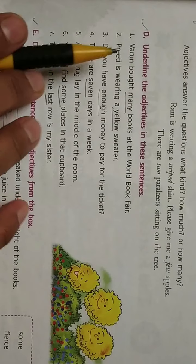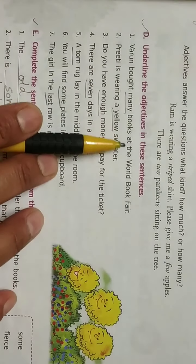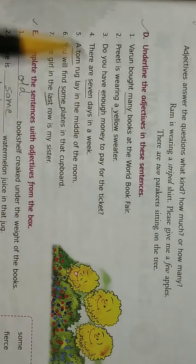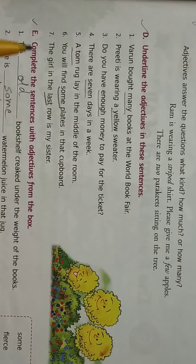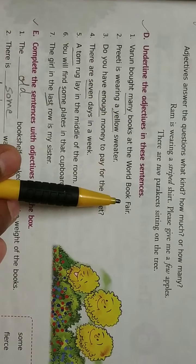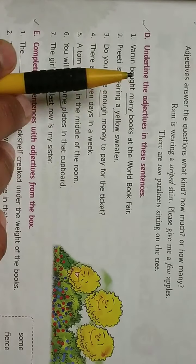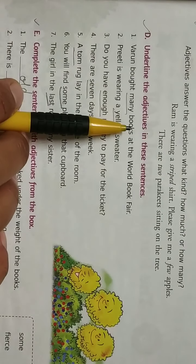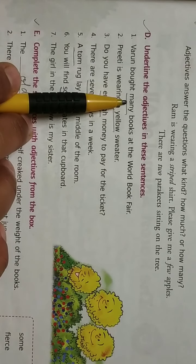The first sentence is Varun bought many books at the World Book Fair. Now find out where is the noun in the sentence. Noun is book, Varun, book. But which noun has an adjective? Books. How many books? Many books. So many is your adjective.